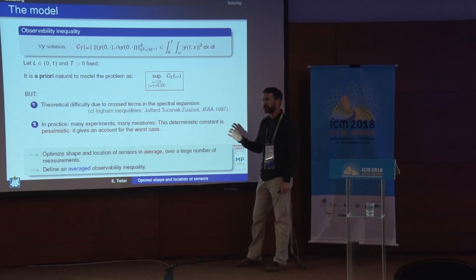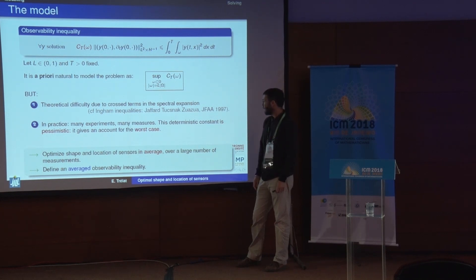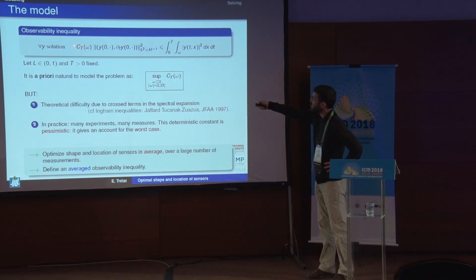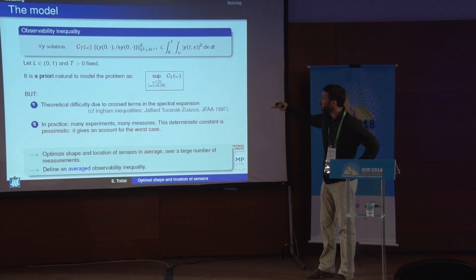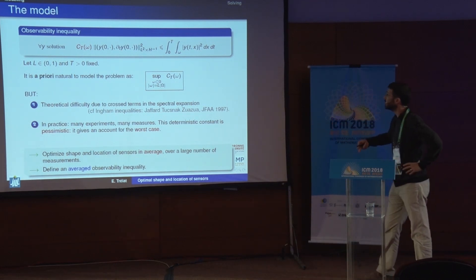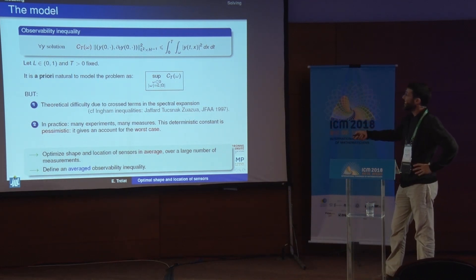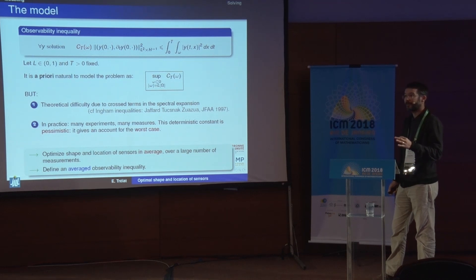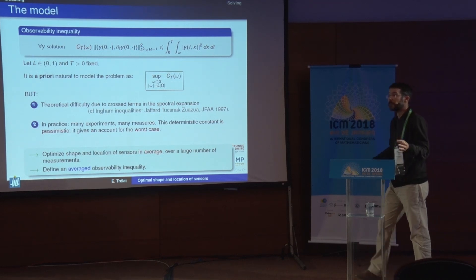There is also a second, more serious reason from the modeling point of view. The observability constant is deterministic — it is an infimum, so it provides an account for the worst possible case. But if you adopt the practical point of view: imagine you have optimally designed some subset omega and placed sensors accordingly. Certainly you are not going to make only one measurement, but hundreds or thousands of measurements.